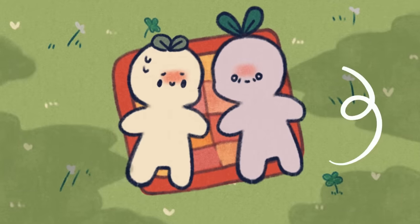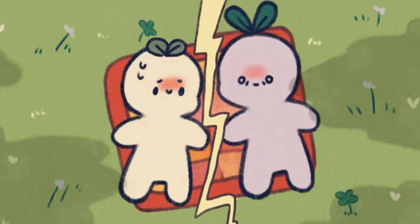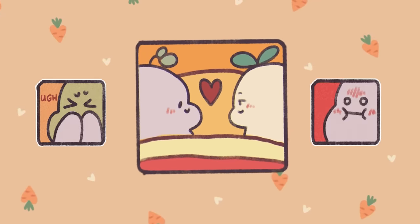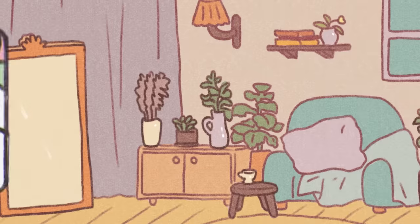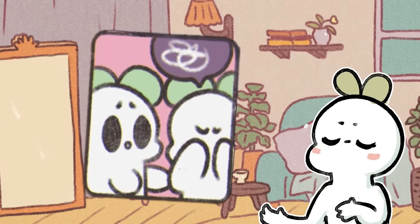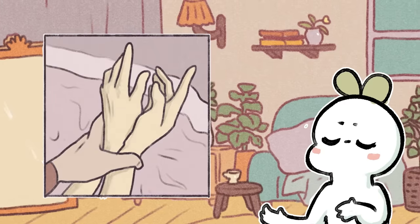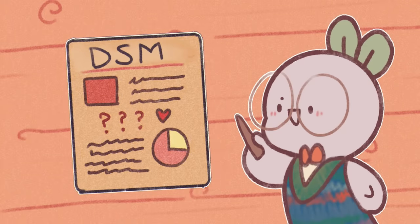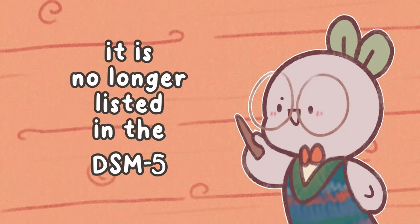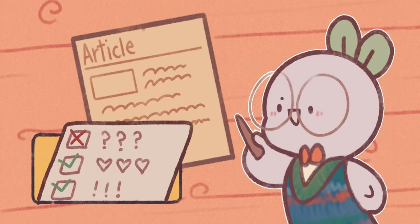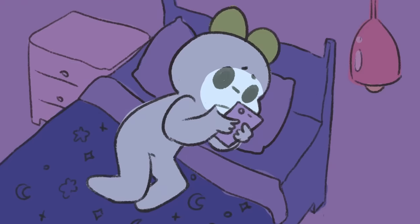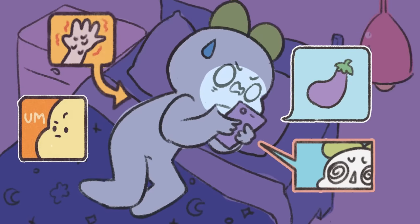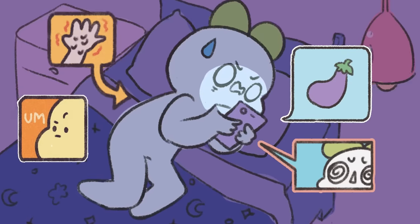Sexual aversion can cause distress in the individual or their partners, since an individual can experience intense feelings of disgust or anxiety when it comes to sex. While it usually applies to all sexual activity, it can also be specific to some activities or some partners. Although sexual aversion disorder was listed in an earlier edition of the DSM, it is no longer listed in the DSM-5 since there is not much research supporting it. Feelings that characterize this condition are negative emotions such as anxiety, distress, and even revulsion surrounding sexual activity.